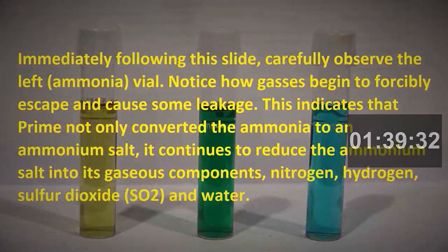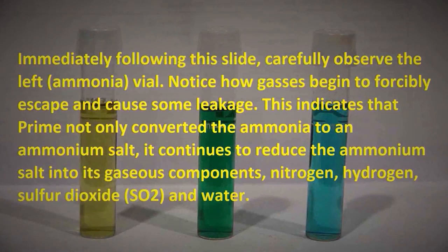Immediately following this slide, carefully observe the left ammonia vial. Notice how gases begin to forcibly escape and cause some leakage. This indicates that Prime not only converted the ammonia to an ammonium salt, it continues to reduce the ammonium salt into its gaseous components: nitrogen, hydrogen, sulfur dioxide, and water.